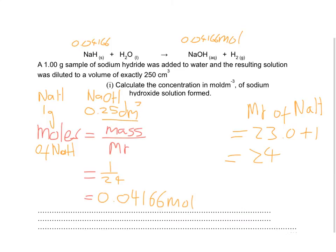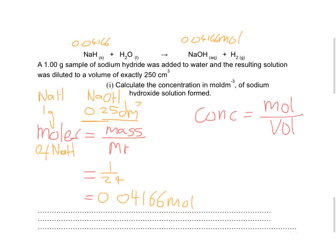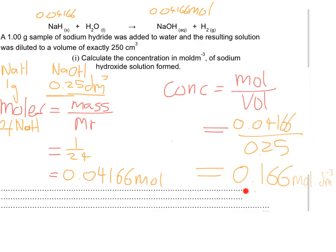We've also got the volume of the sodium hydroxide. You should remember the equation that concentration equals moles divided by volume. We've got 0.04166, that's the moles, dividing by the volume which is 0.25, and that comes out as 0.166. The units for that is moles per dm cubed.